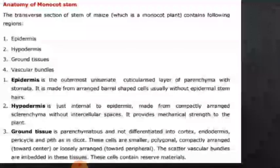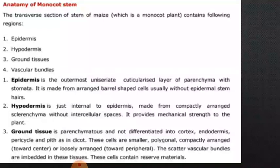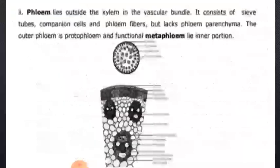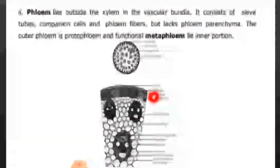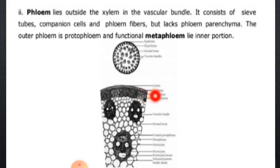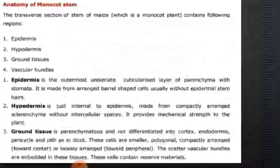Second is hypodermis. Hypodermis is just internal to the epidermis. It is made from compactly arranged sclerenchymatous cells without intercellular spaces. Its main function is to provide mechanical strength to the plant. It is the second layer inner to the epidermis.